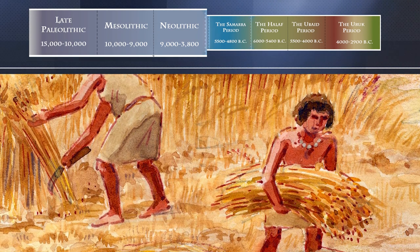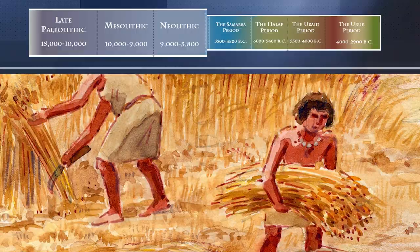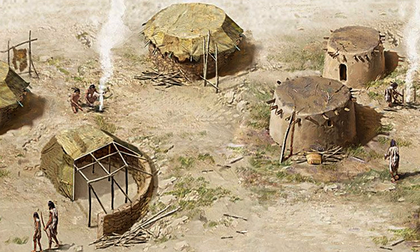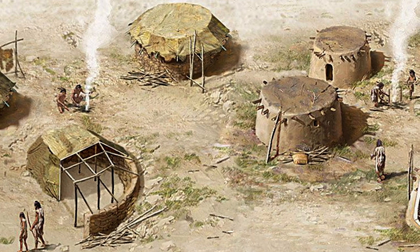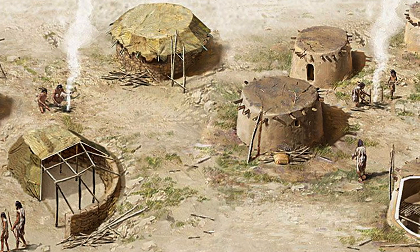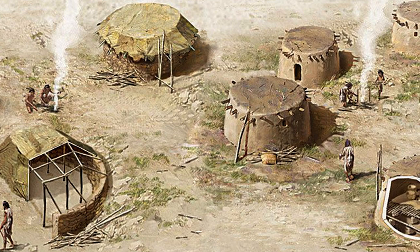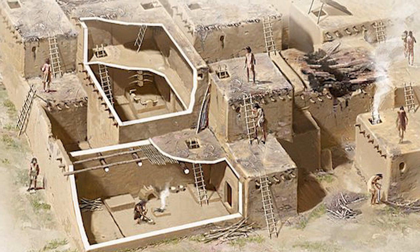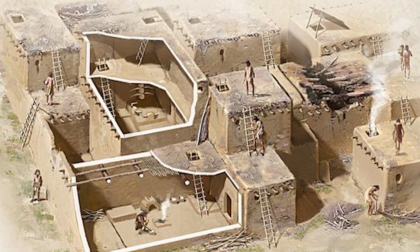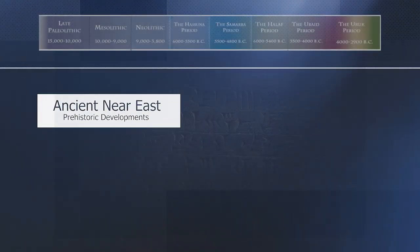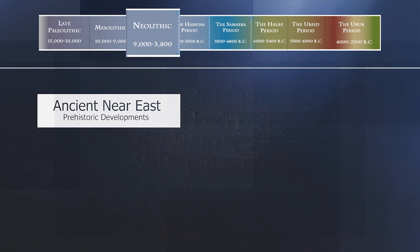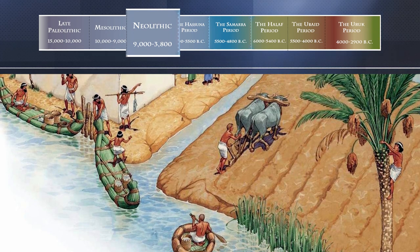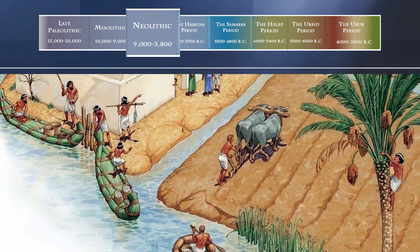Sheep and goats became domesticated around this time as well. The house is the best distinguished attribute of sedentary life in the archaeological record. In the Levant, houses were built of stone or with stone foundations. Elsewhere in the Near East, these walls were of piled mud and later of mud brick. These settlements became increasingly large, and a shift from round to rectangular houses took place in the 9th millennium. By 7,000 BC, agricultural villages existed throughout the Near East in areas with sufficient rainfall for farming.